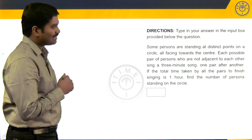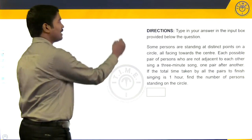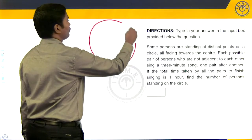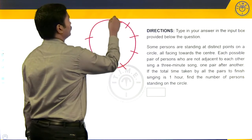Some persons are standing at distinct points on a circle, all facing towards the center. We don't know, there's a big circle. Some people are standing at distinct points on a circle.